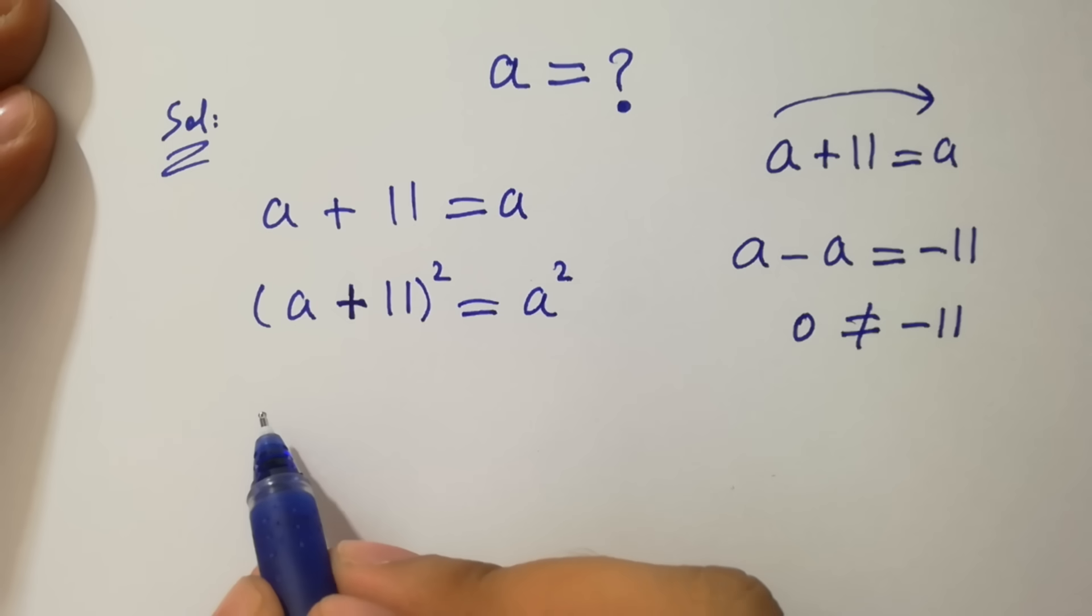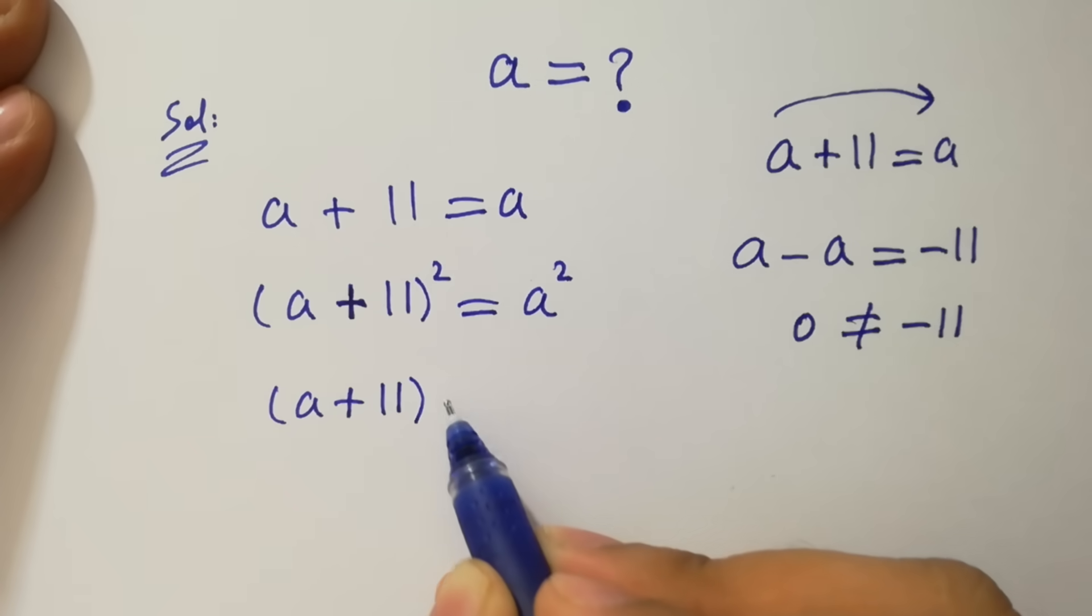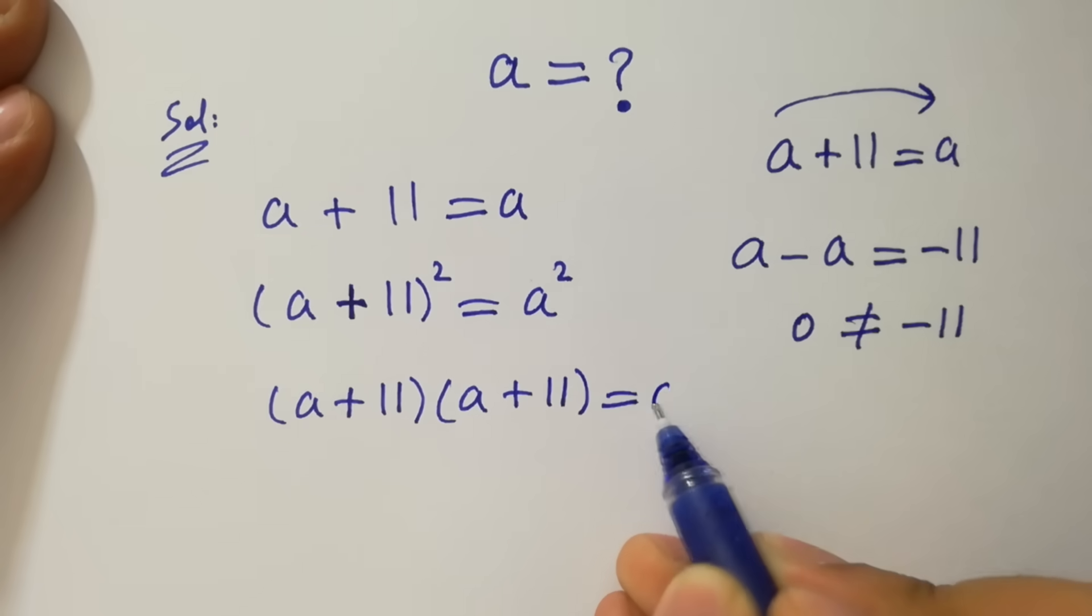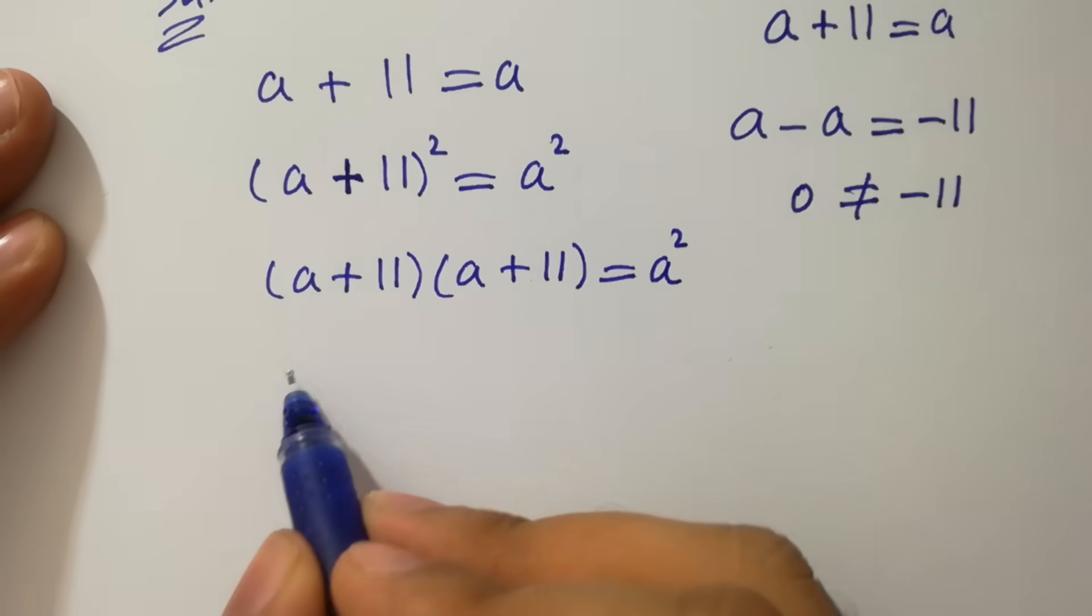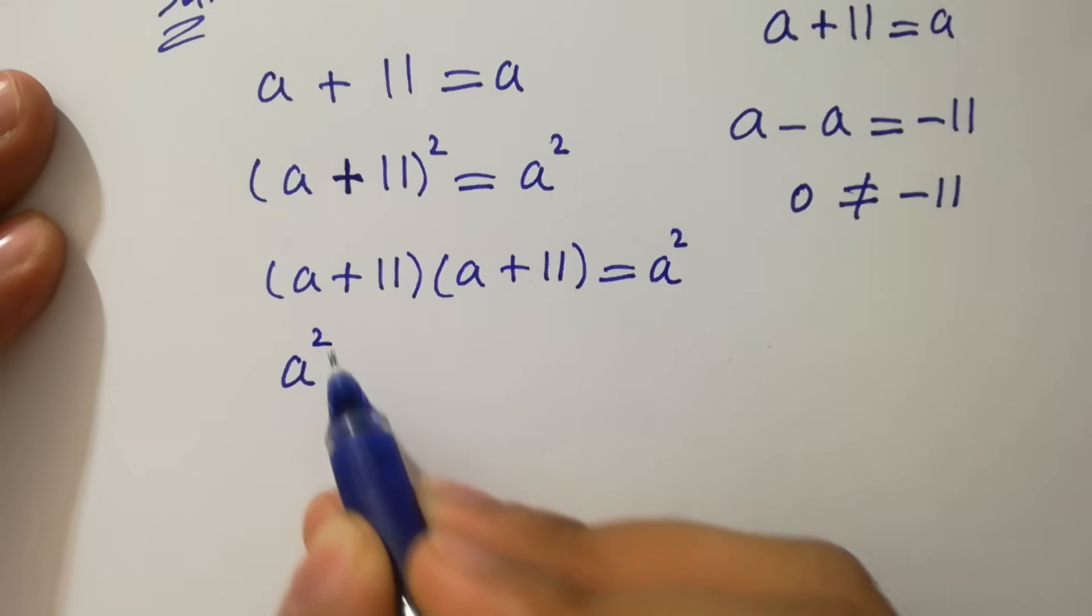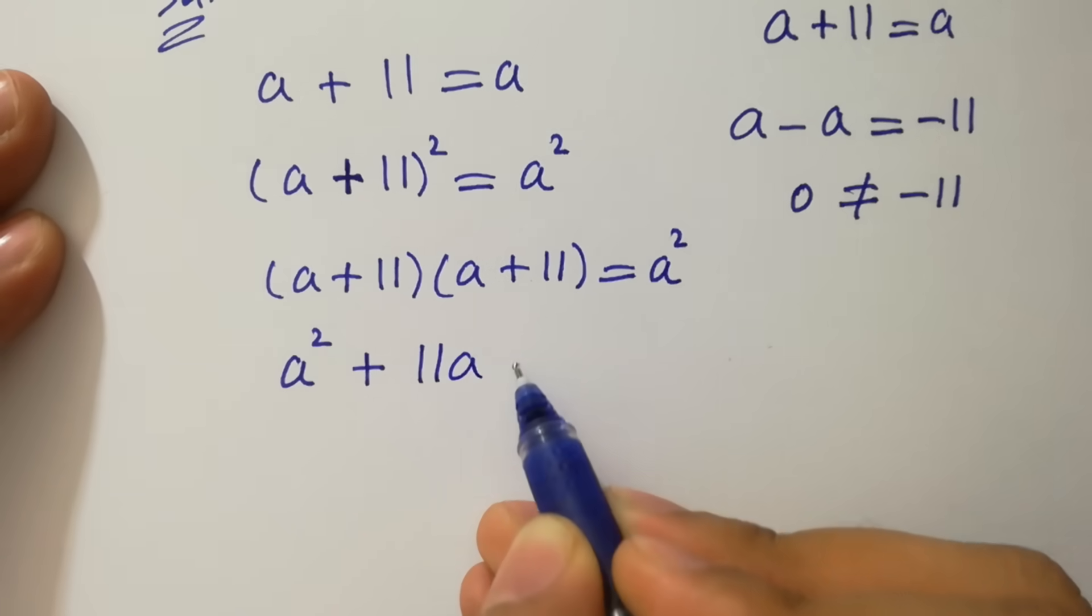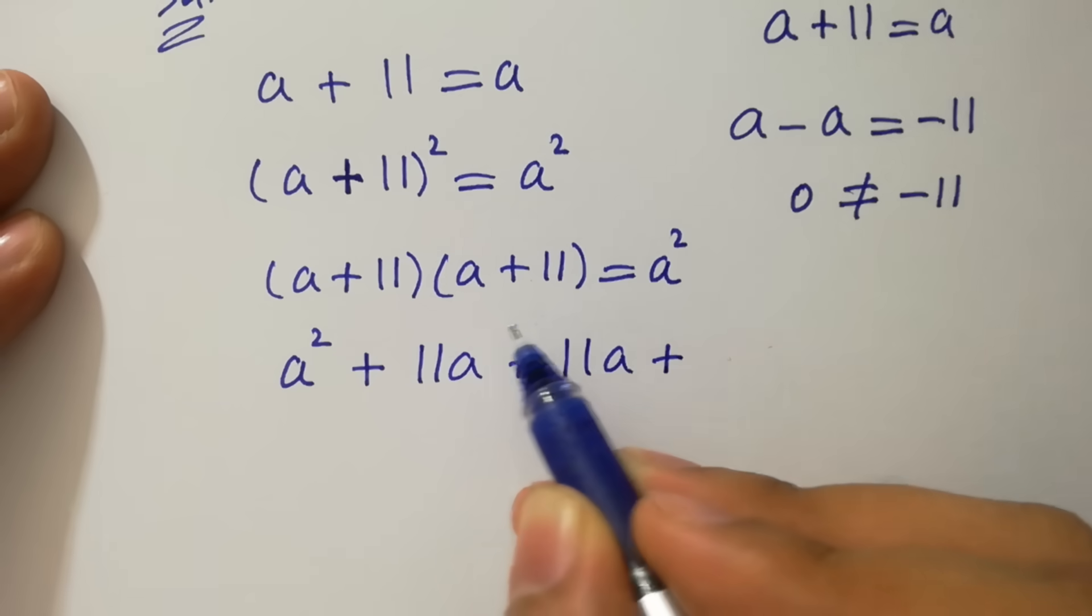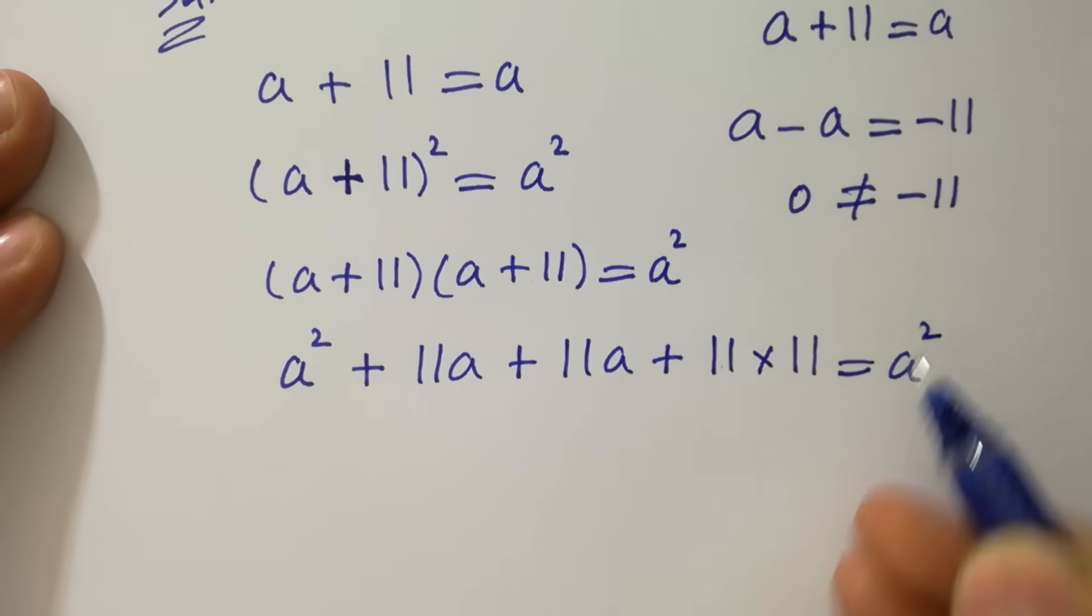Which is same as a plus 11 times a plus 11 equal to a square. Simplify this, a times a, a square plus 11a plus 11a plus 11 times 11 equal to a square.